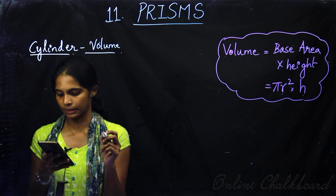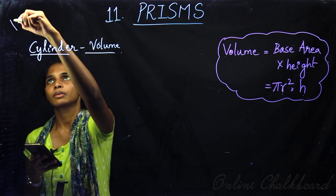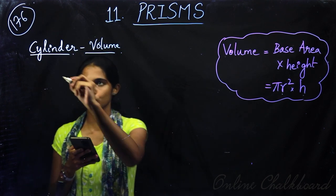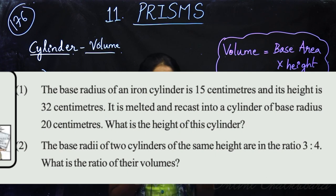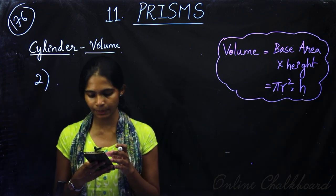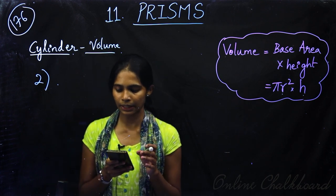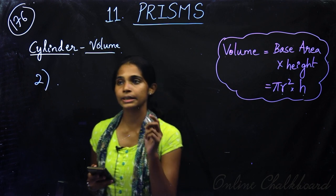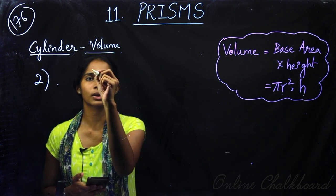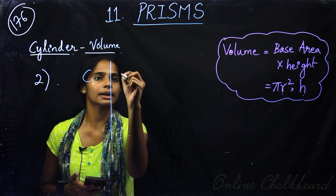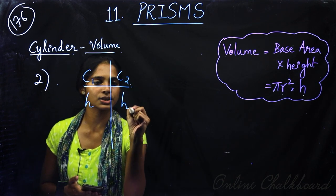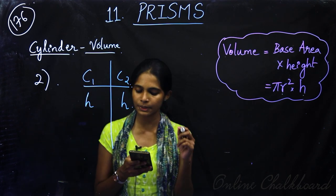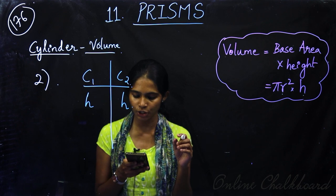We are doing these questions from the soft copy, page number 106, exercise question number 2. The base radii of two cylinders of the same height are in the ratio of 3 to 4. What is the ratio of their volumes? Now, we have two cylinders — C1 and C2 — with the same height. The radii are in the ratio of 3 is to 4.